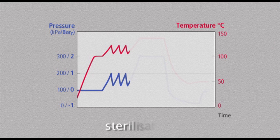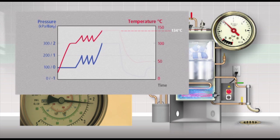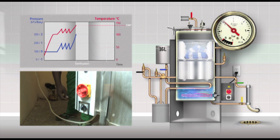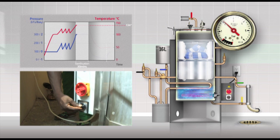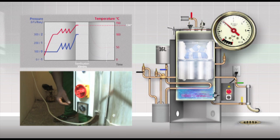Now let the pressure build up until it reaches between 2.0 and 2.2 bar, which is 134 degrees Celsius. At this point sterilization starts. Set the timer for 30 minutes.